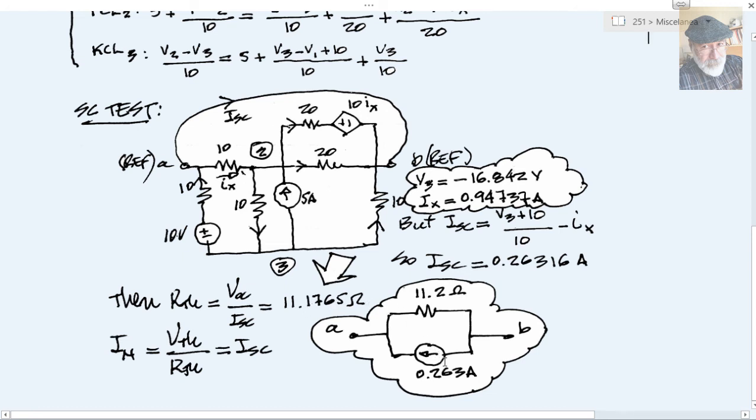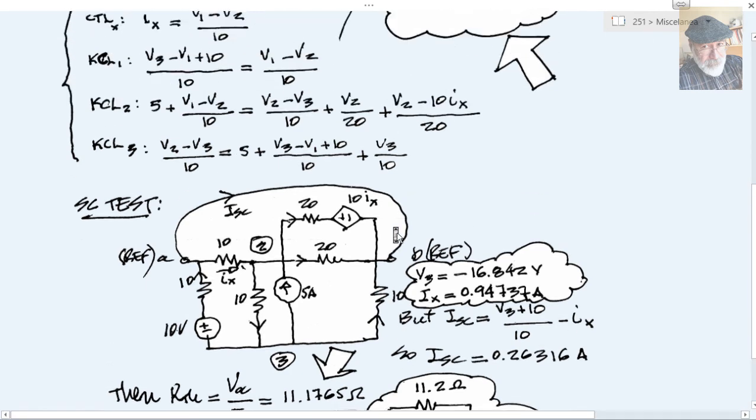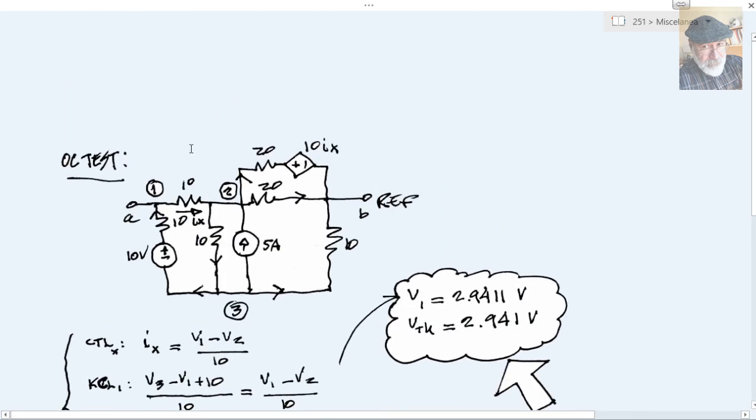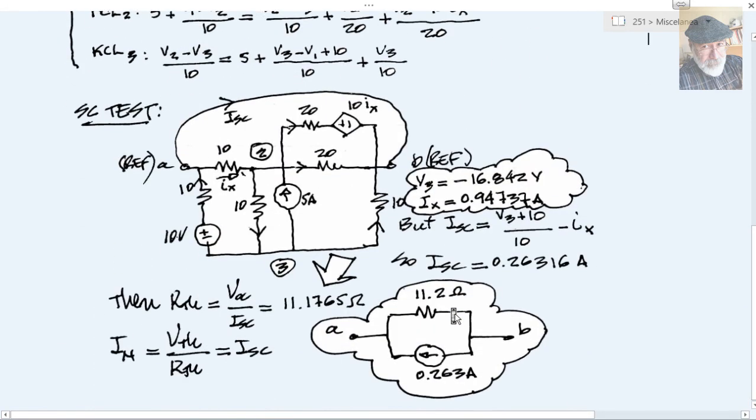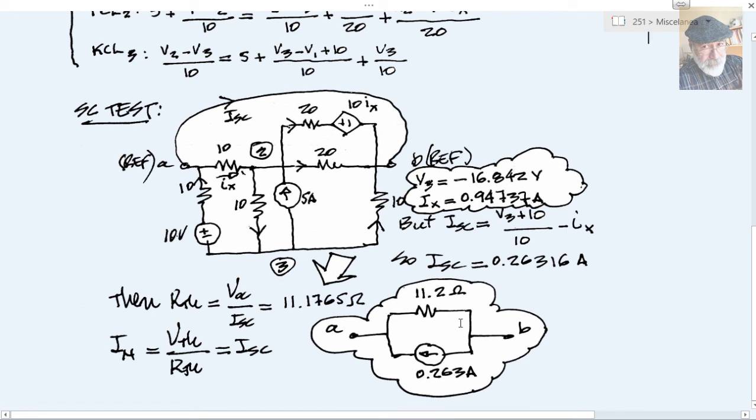The polarity, all the polarities from B to A, because we compute V_Thevenin and it was positive, pointing A versus B. And that is what we did. That's why the polarity of the Norton equivalent is as shown. And that finishes the first question of your second midterm.